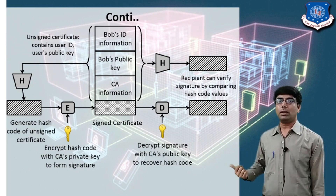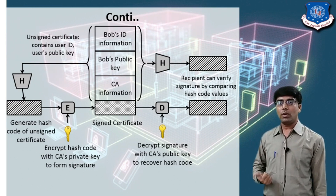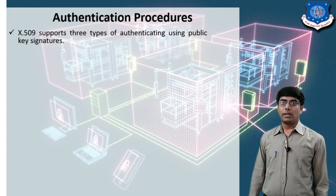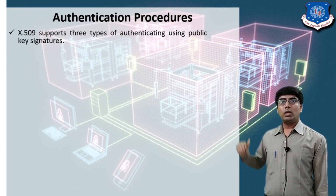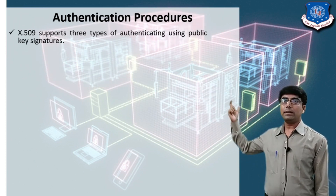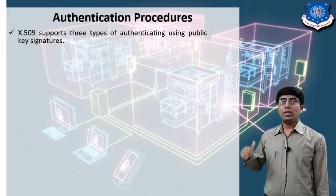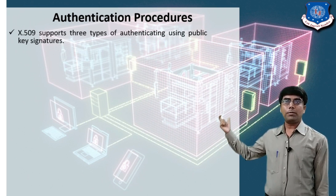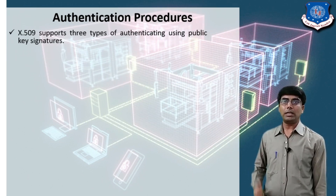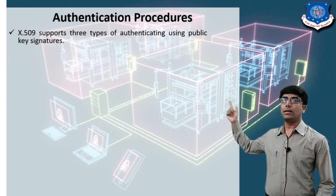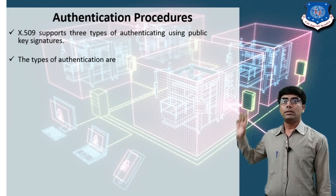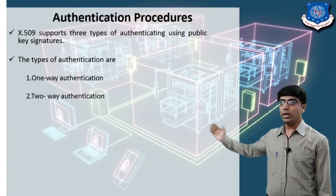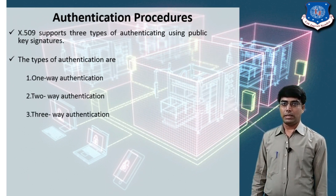The recipient can verify the signature by comparing the two hash codes — if both are equal, the signature is valid. X.509 supports three types of authentication using public key signatures: one-way authentication, two-way authentication, and three-way authentication.